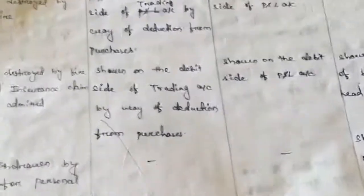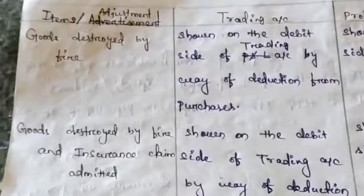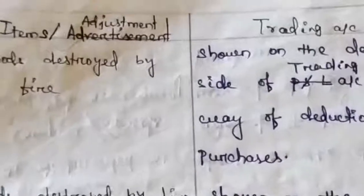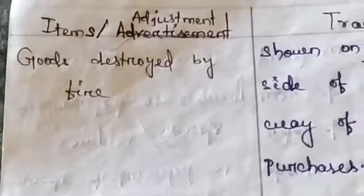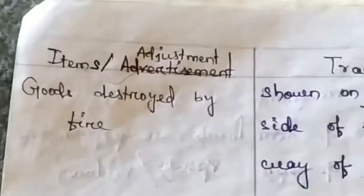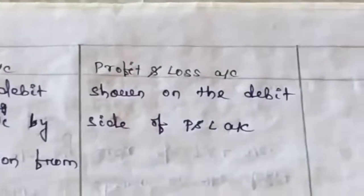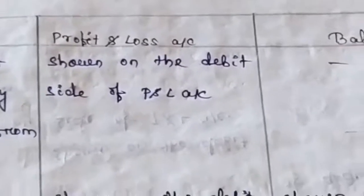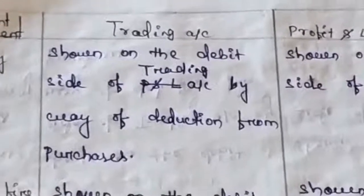Next adjustment is goods destroyed by fire. The journal entry is: goods destroyed by fire account debited to purchases. Goods destroyed by fire is a loss shown on the debit side of the profit and loss account. Since it also reduces the value of purchased goods, it is shown on the debit side of the trading account by way of deduction from purchases.